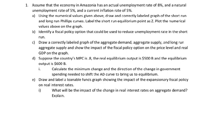Number one says: assume the economy of Amazonia has an actual unemployment rate of 8% and a natural unemployment rate of 5%, and a current rate of inflation of 5%. Using the numerical numbers given above, draw a correctly labeled graph of the short run and long run Phillips curve, label the short run equilibrium point as Z, and plot the numerical values above on the graph.